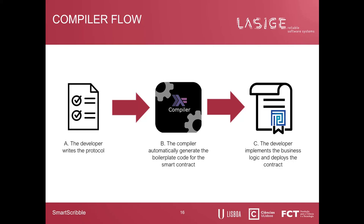We follow a simple three-step recipe to generate safe smart contracts. First, the developer writes the protocol in SmartScribble. The compiler will then generate the boilerplate code for the smart contract and, of course, the state machine. We use the state machine to verify interactions. Finally, the developer has a specific module for business logic and will modify this module according to business requirements, stakeholders, etc.